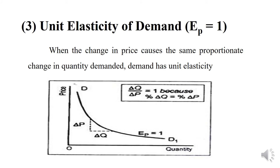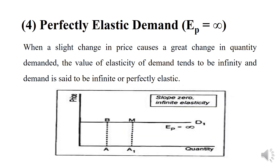The next type is unit elasticity of demand. Suppose the price of a commodity declines from rupees 2000 to rupees 100 per kilogram. As a result, demand for the commodity rises from 400 kilograms to 800 kilograms. This means the change in quantity to change in price is equal to one — unit elasticity.